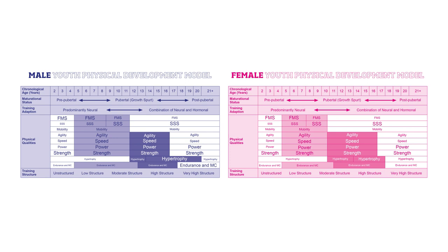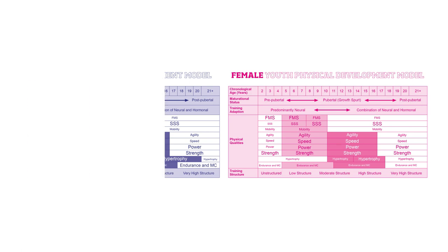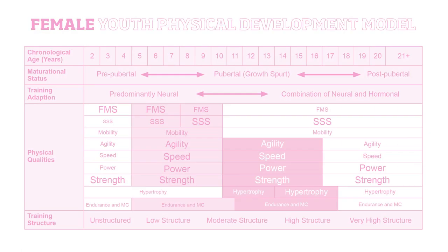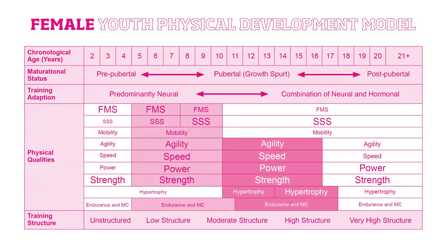These phases differ on the male and female models because girls on average start puberty and reach peak height velocity about two years before boys. Using maturational status along with chronological age as a guide to developmental stage helps us tailor training to each individual child.